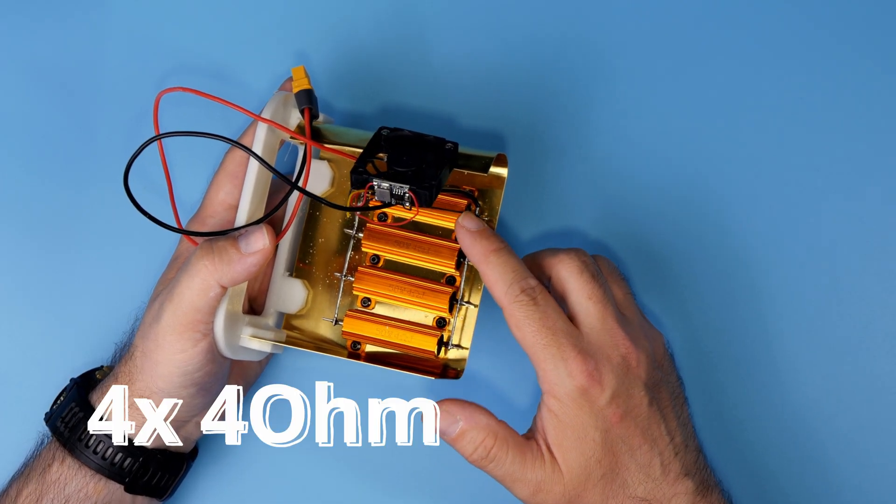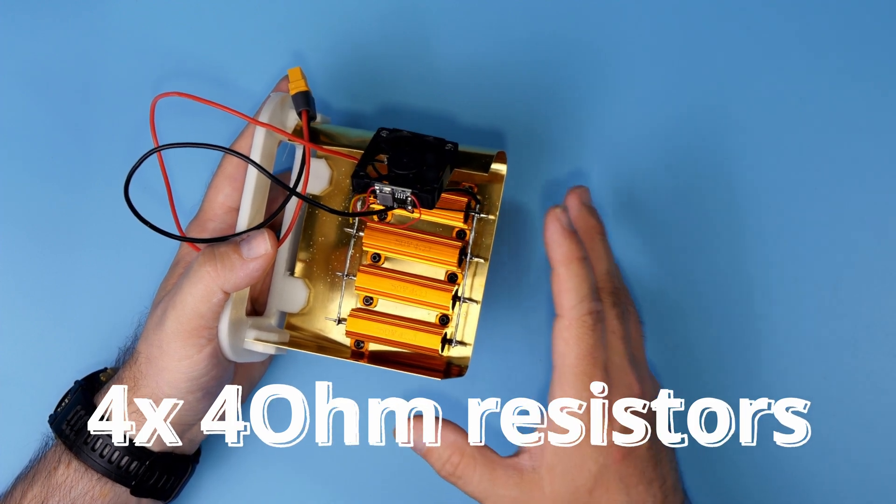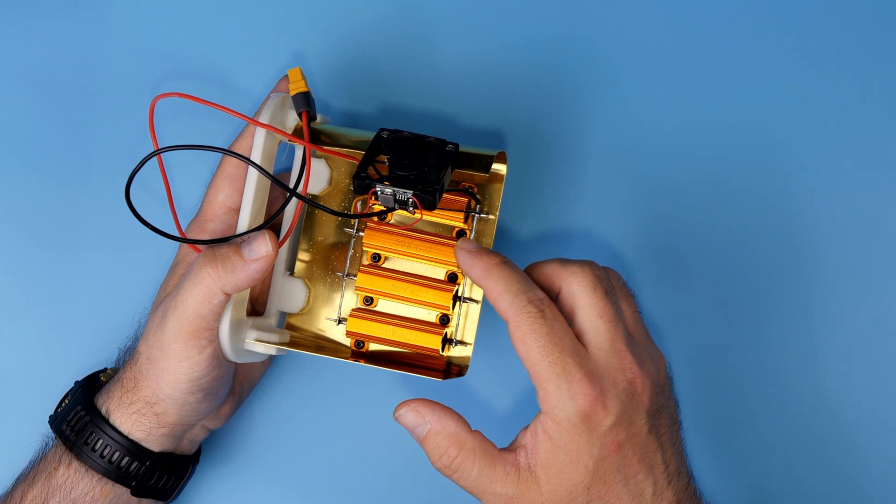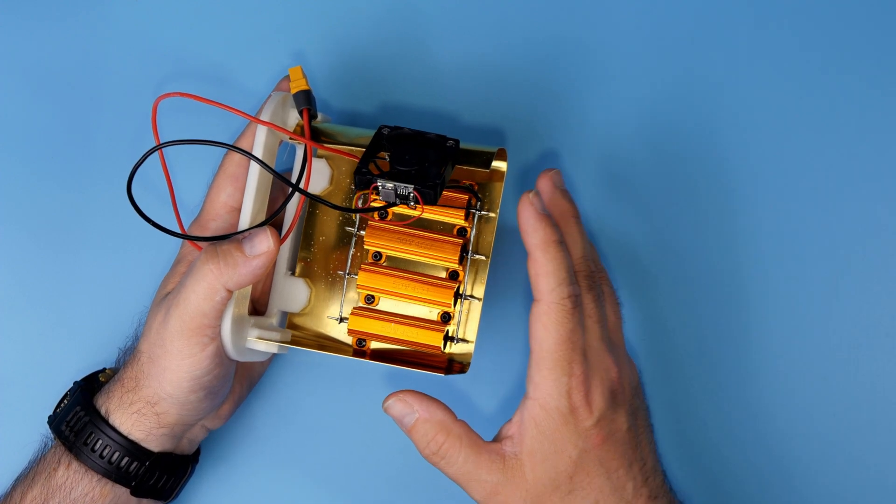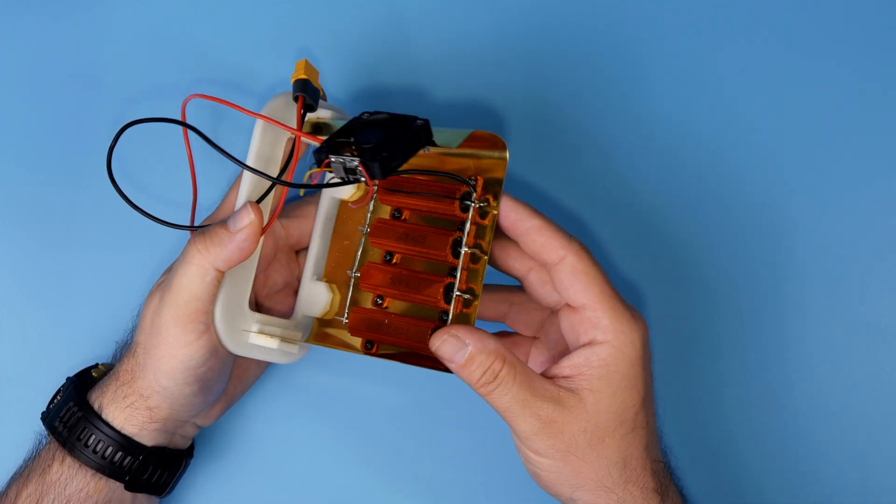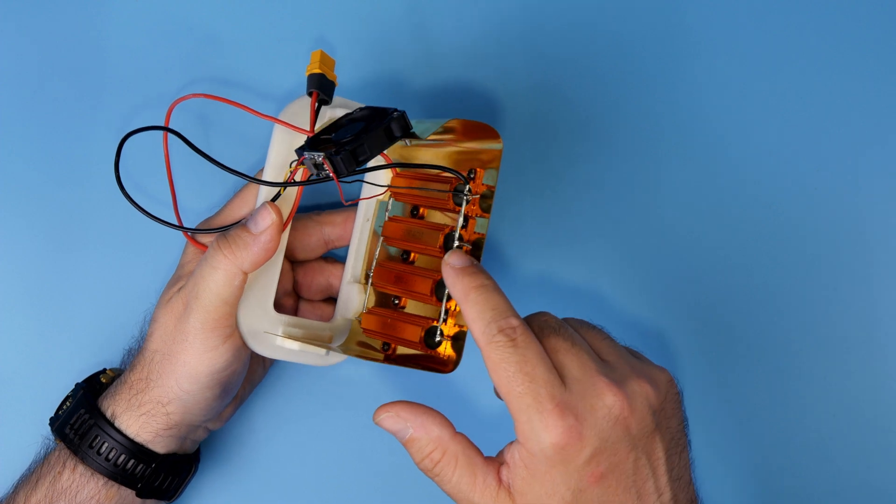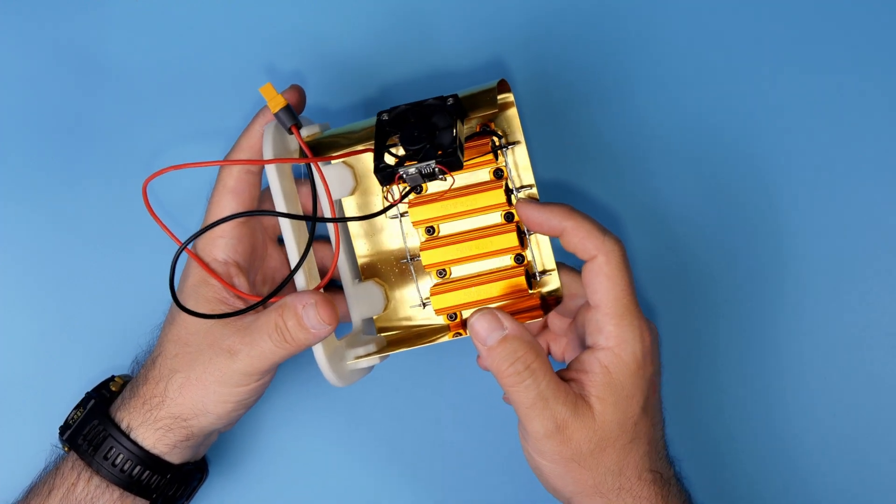Those four are the high load resistors. Each of those has a roughly resistance of 4 ohms, and each is capable of dissipating around 50 watts. Four ohms each, four connected in parallel. That means that in total the resistance of this battery is around 1 ohm.